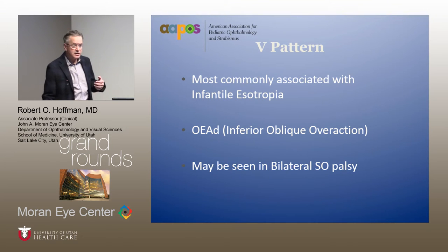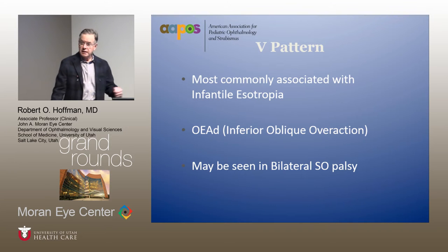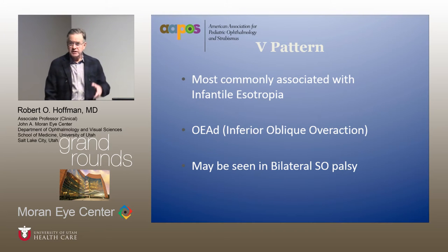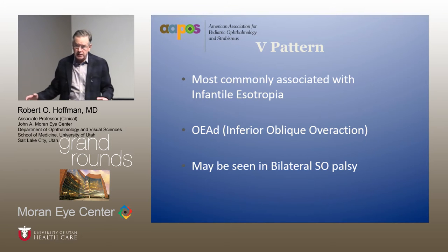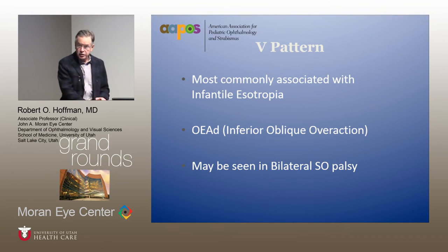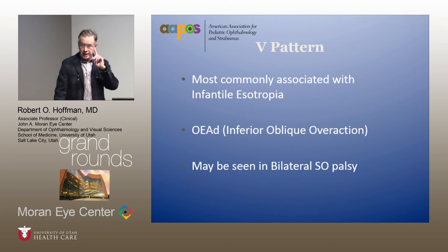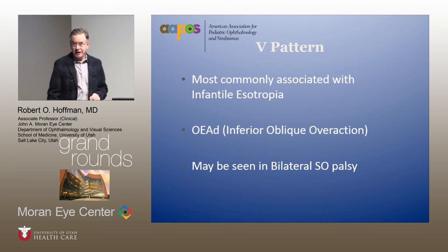You can also see V patterns with bilateral superior oblique palsies. When you see a unilateral superior oblique palsy, if you see a large V pattern, you should look very carefully for subtle overaction of the contralateral inferior oblique and underaction of the superior oblique. If not present, warn the family before you do unilateral surgery that they're likely going to be back in the future for additional surgery.